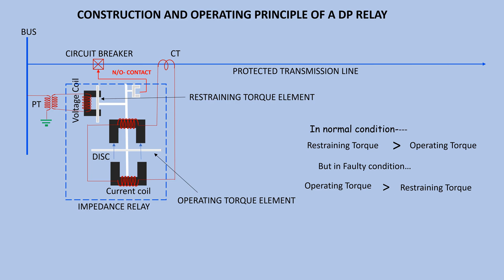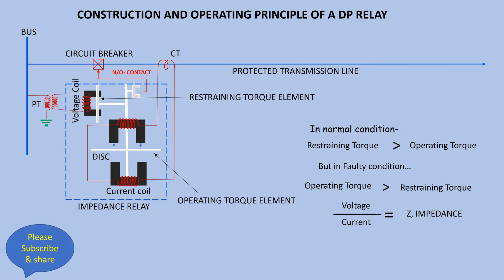The operation or working principle of a distance relay depends upon the ratio of system voltage and current. Since the ratio of voltage and current is impedance, a distance relay is also known as an impedance relay. The relay operates only when the ratio of voltage and current falls below a preset value. The distance protection is high-speed protection and is simple to apply; it can be employed as primary as well as backup protection.